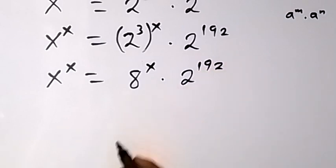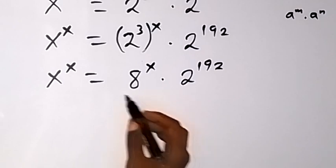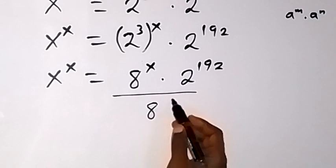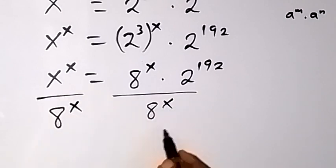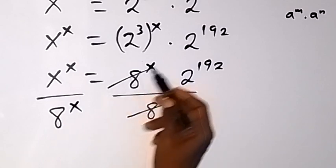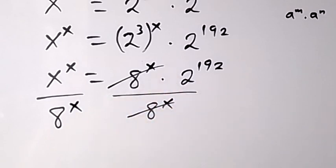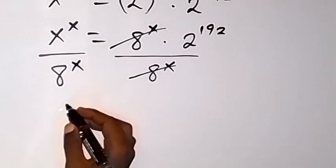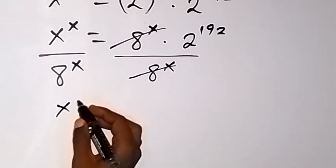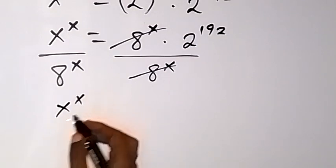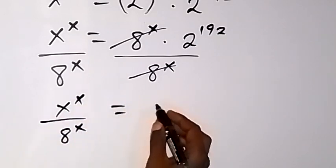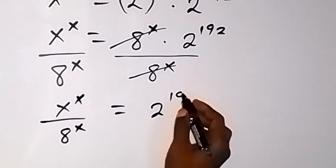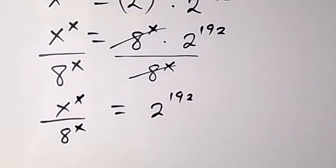Then let's divide both sides by 8 raised to power x, so we divide this side by 8 raised to power x and this side as well. So x raised to power x will cancel, and we are left with x raised to power x over 8 raised to power x equals to 2 raised to power 192.